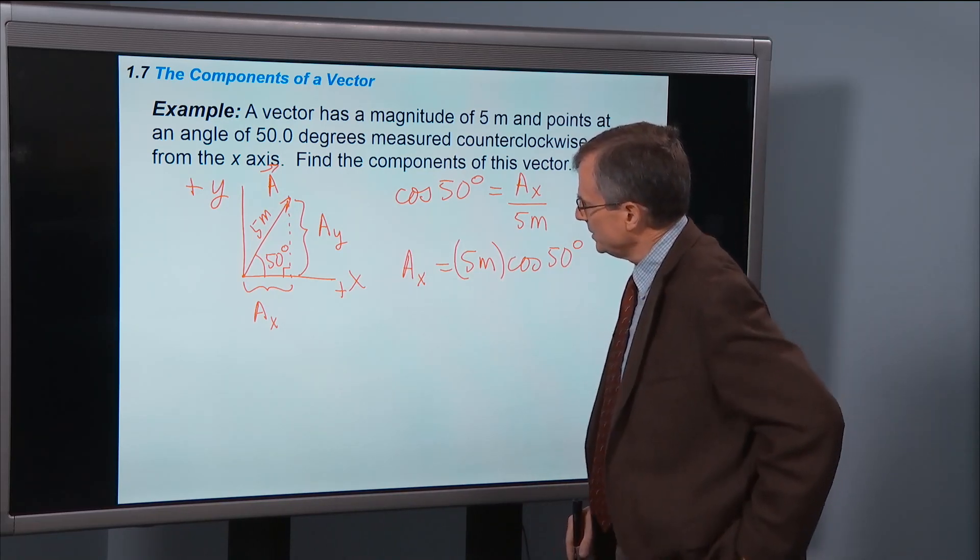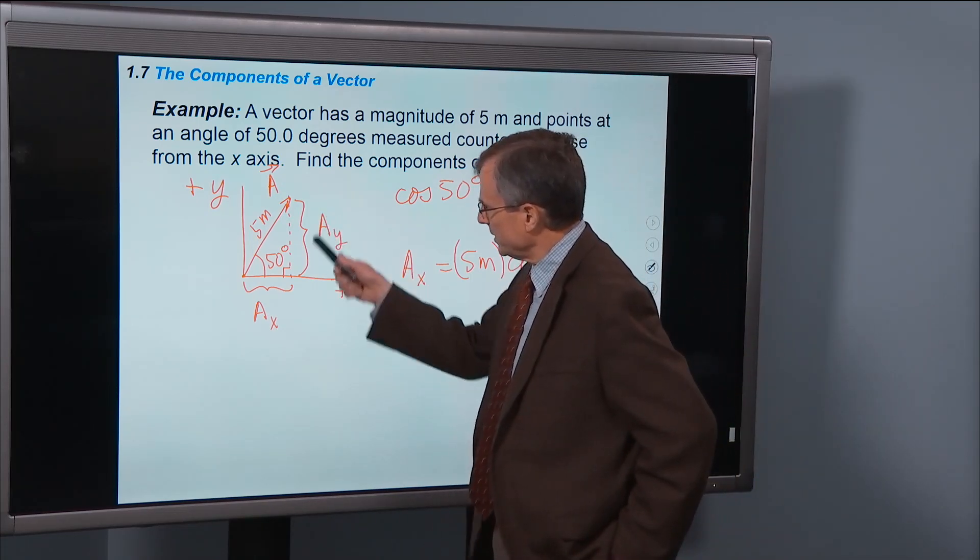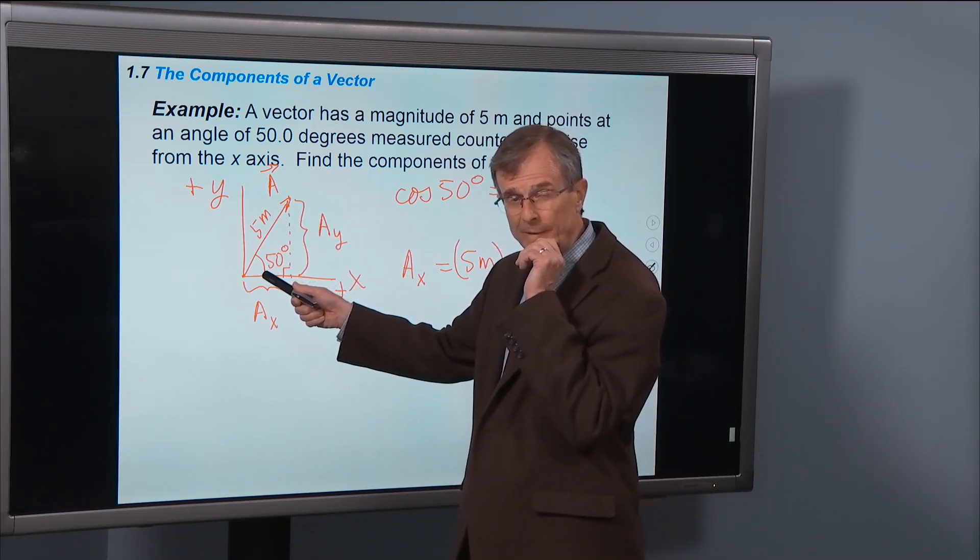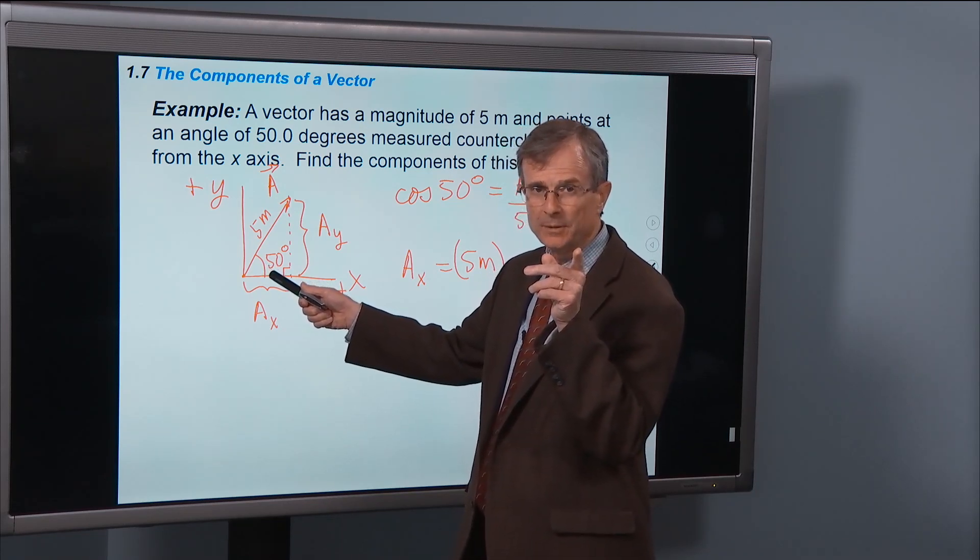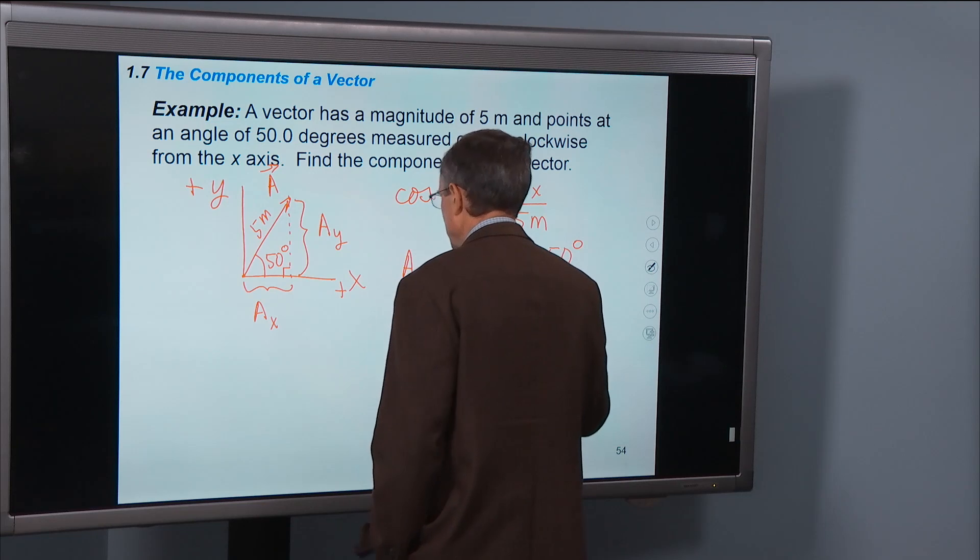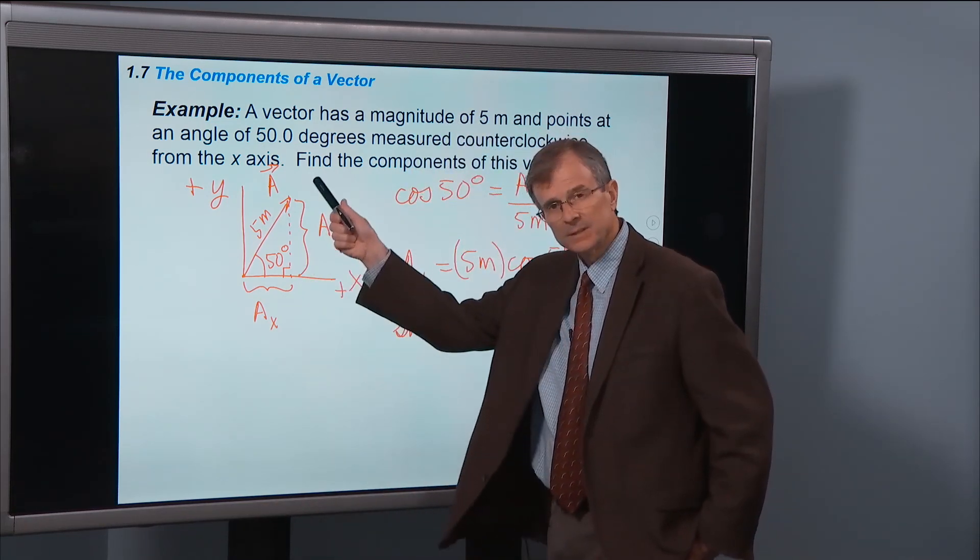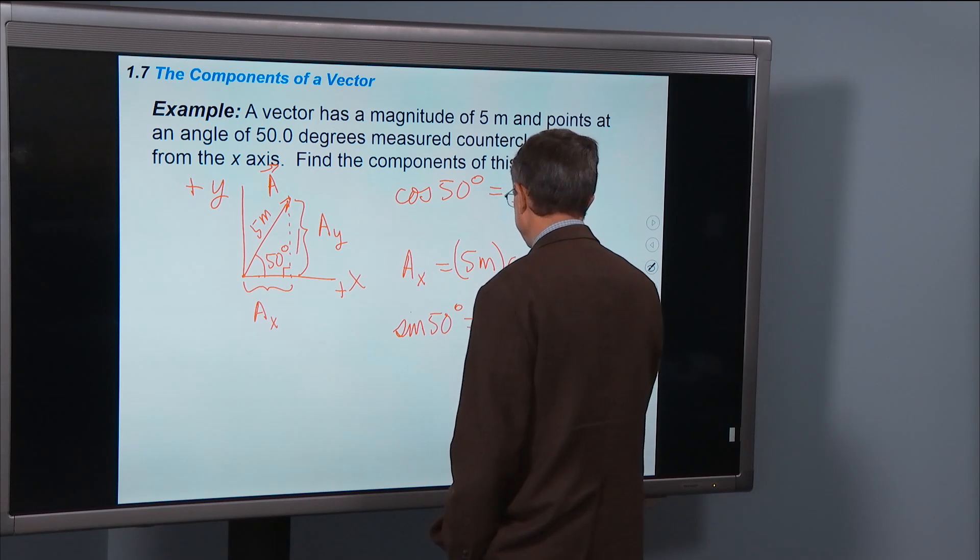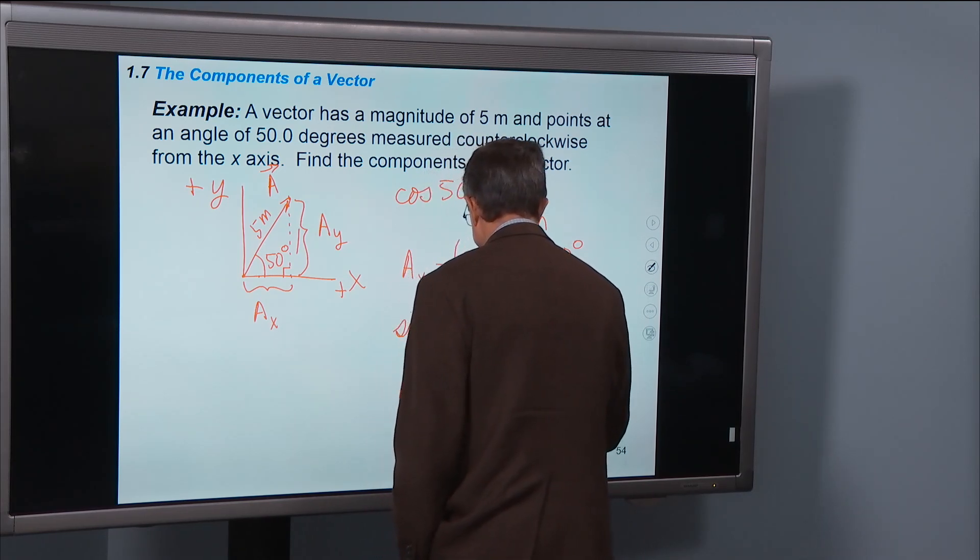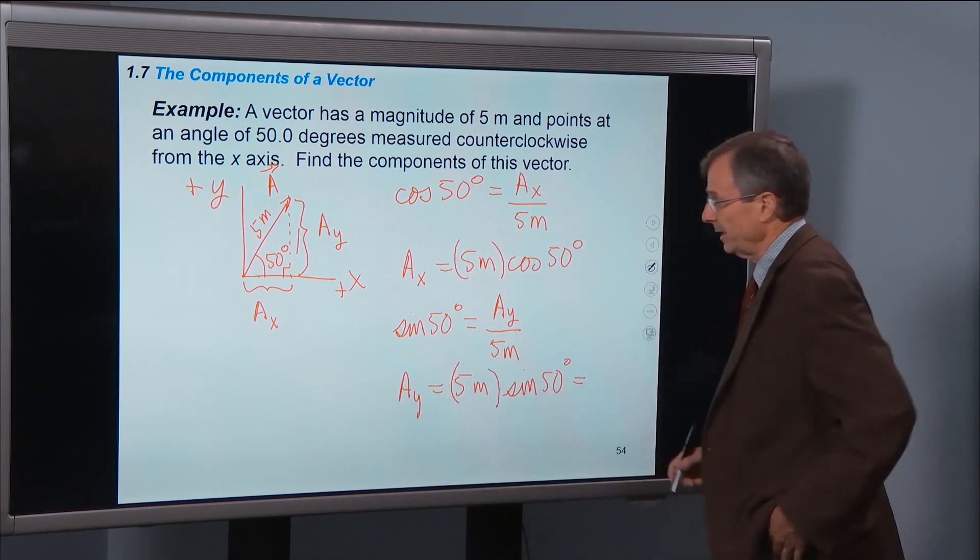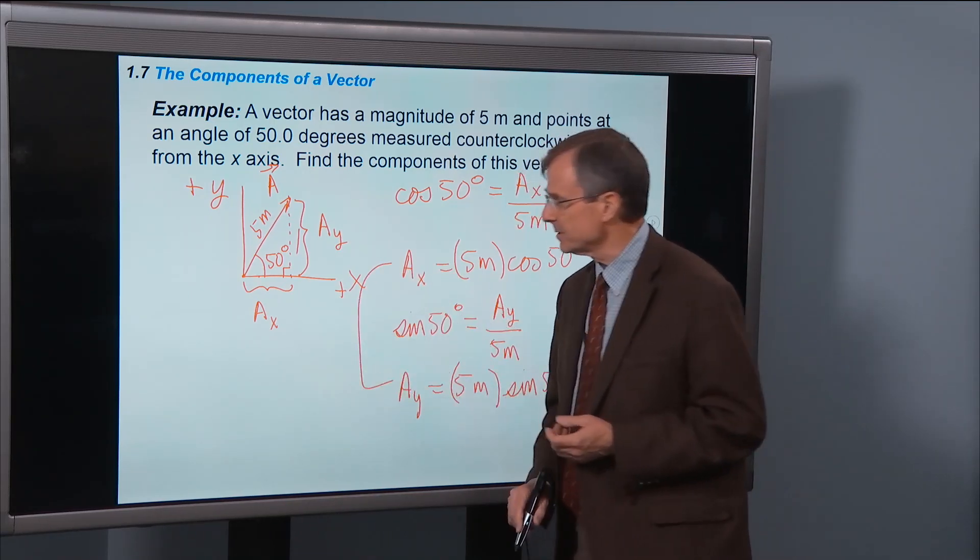What about Ay? You say, well I'm getting the hang of this, I can do Ay. I want to relate this side of the triangle and this hypotenuse of the triangle to this angle 50 degrees. So what trigonometric function would we like to look at? You say the sine, and I say you're exactly right. Sine of 50 degrees is the side opposite this angle. Here's the angle, here's the side opposite. And therefore Ay is 5 meters times sine 50 degrees, which gives whatever it gives. So that's how to find these components from the magnitude and direction.